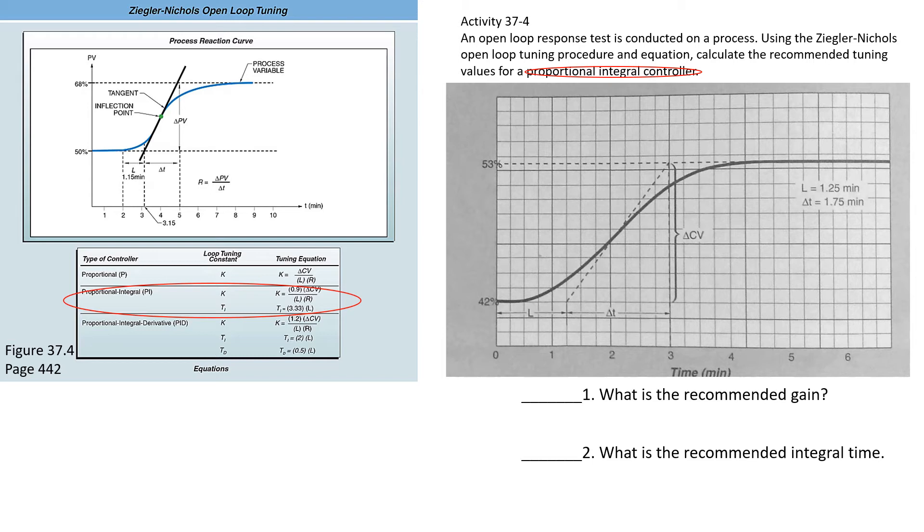We found the L and the Delta T by finding the inflection point here and using that inflection point to draw a line tangent to that. That is the distance between where we've made the change at time zero until we start to see this tangent line cross over and intersect all the way up to the top.